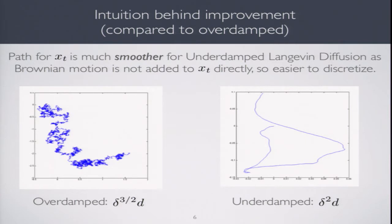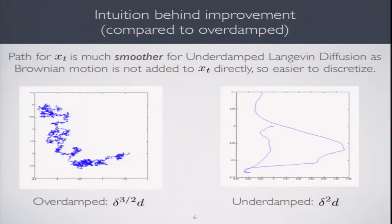On the left, we see the sample path of overdamped Langevin diffusion. In overdamped, recall the Brownian motion term is added directly to your position variable x_t. dx_t is something-something plus dB_t. Brownian motion is very irregular, so it looks like a rather messy thing. Because of that, the discretization error scales as roughly δ^(3/2).